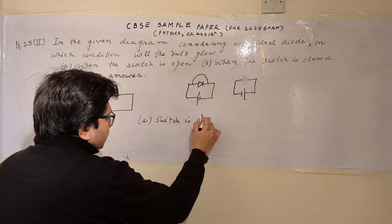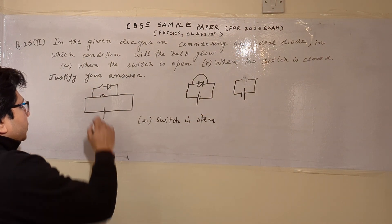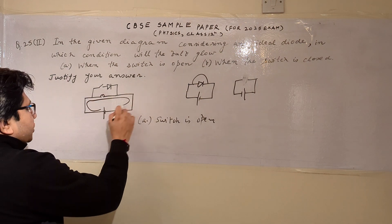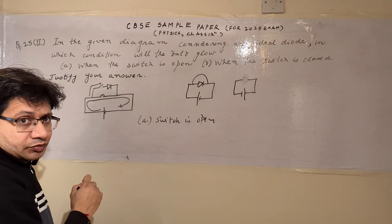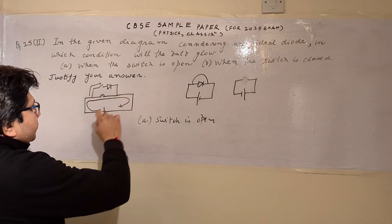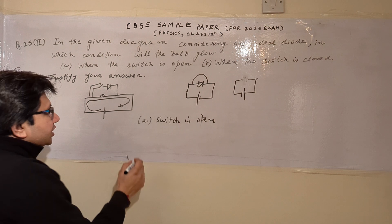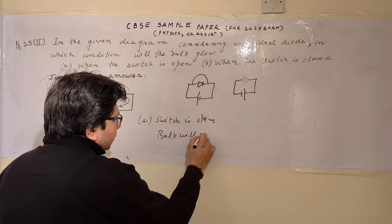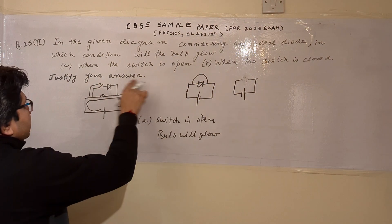When the switch is open, the current from the battery goes through the lamp. The current will not go into the path with the switch because it is an open circuit path. All the current goes to the bulb.